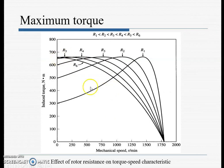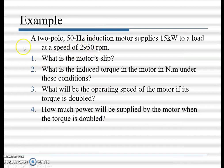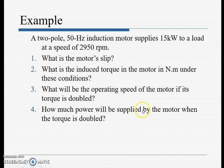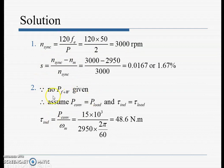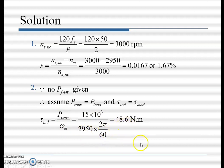Another numerical: A 2-pole, 50 Hz induction motor supplies 15 kW to a load at a speed of 2950 rpm. Find the motor slip, induced torque in Newton-meters, and what happens when torque is doubled. Synchronous speed = 120 × 50 / 2 = 3000 rpm. Slip is calculated from the standard formula. Assuming no frictional and windage losses, torque T = P / ω_m = 15000 / (2π × 2950/60) = 48.6 Newton-meters.